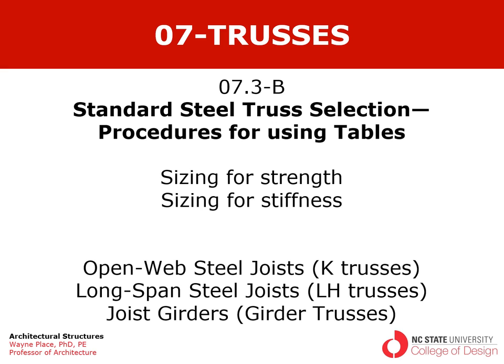Welcome to our lecture from chapter 7, section 3. This is our second lecture on standard steel trusses. The first was on fabrication, and this one has to do with selecting standard steel trusses — the procedure for using the tables provided by the industry. As with all our other steel sizing operations, we're going to address both strength and stiffness. Strength will be treated under the full factored load, and stiffness will be addressed under live load. This video is going to be based on load and resistance factor design, LRFD.